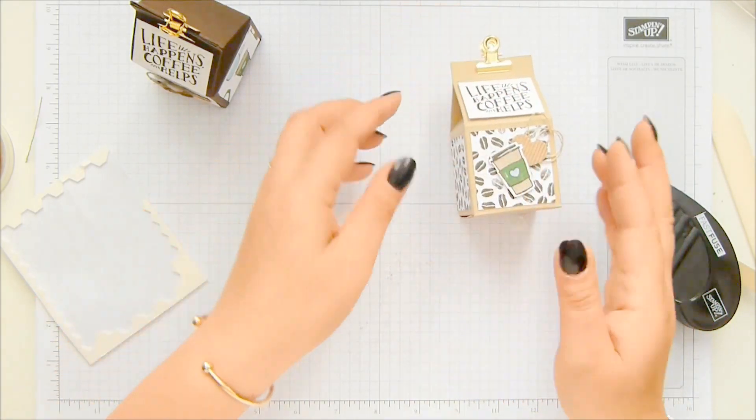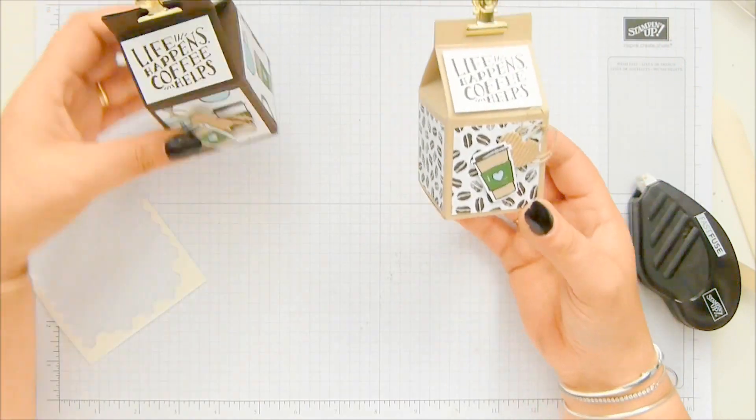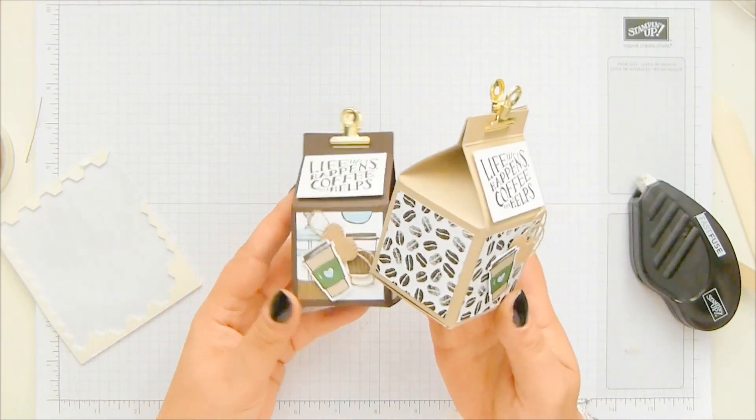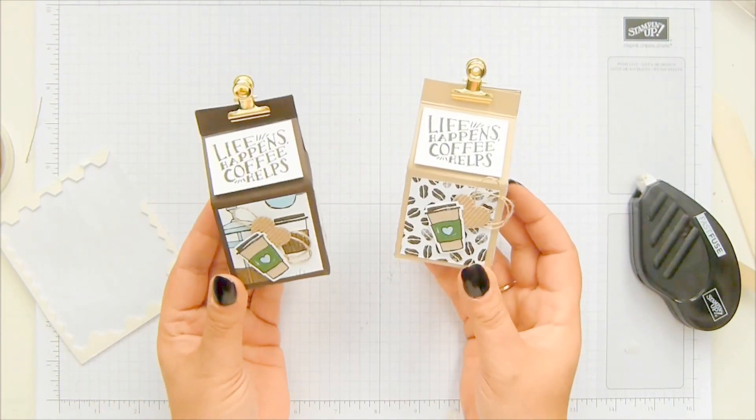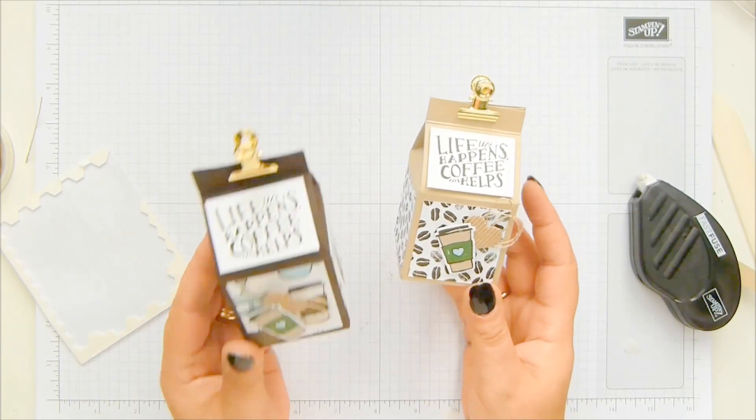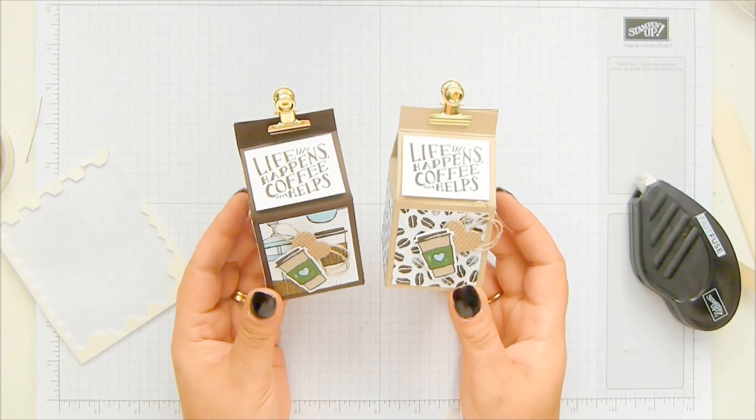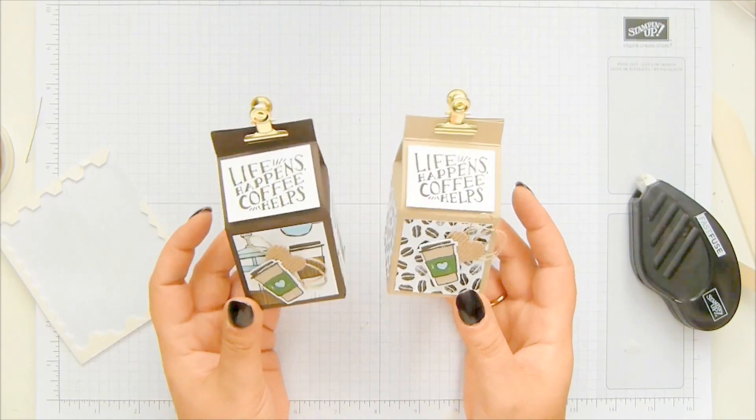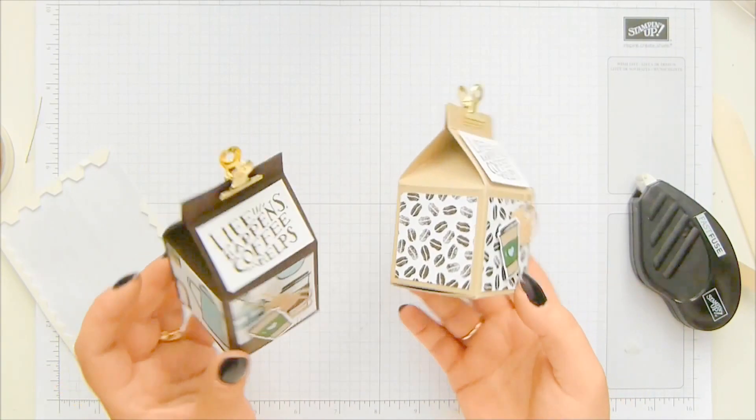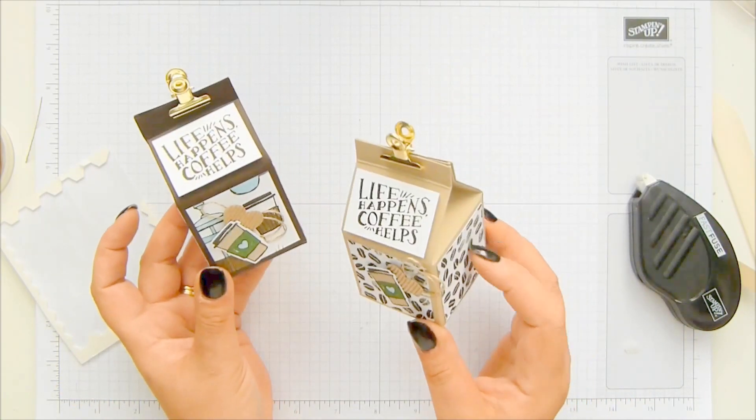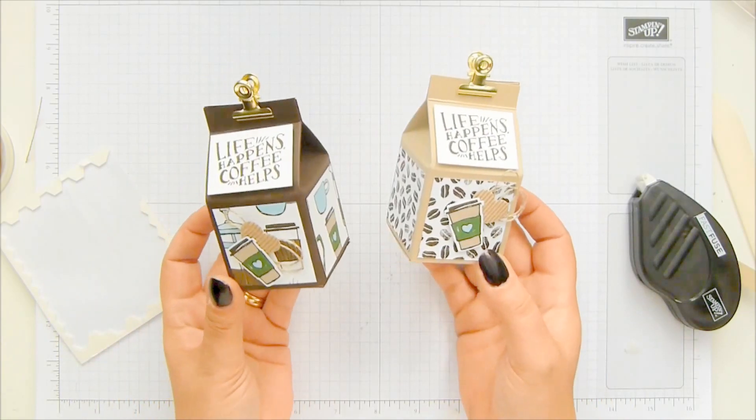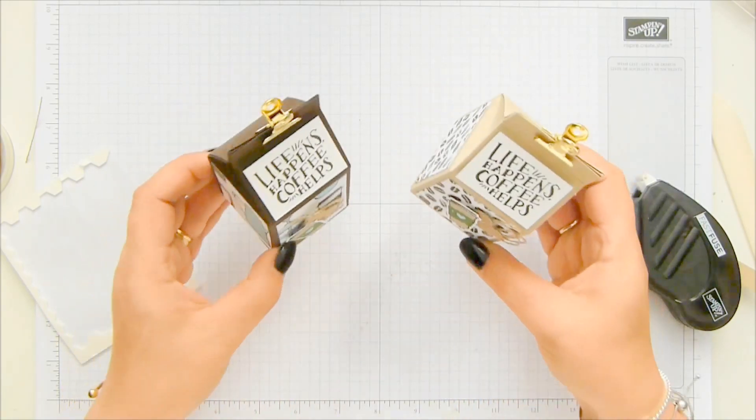So pop that up there. I'm going to have another dimensional or two on the back of the coffee cup. Onto there. Life Happens Coffee Helps. How cute is that? Love it. Love the paper. Love the corrugated elements. Love the fact that I can die cut the paper. Love the stamping. Love it all. And these library clips. Happy, happy days. And I like it in the crumb cake. I love the early espresso. Love the crumb cake too.